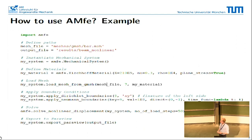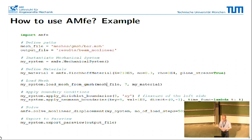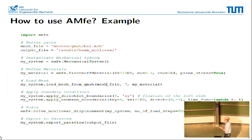How to use AMFE? Here's a short example. First, you generate a mesh with an open source program of your choice, for example gmesh. Then you define the path to your mesh file and the output path. You instantiate a mechanical system object, define a material such as Kirchhoff material, load the mesh and assign the materials to it, define the boundary conditions, solve it, and export to a visualizer like Paraview.